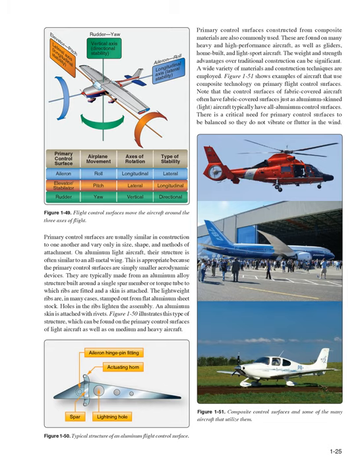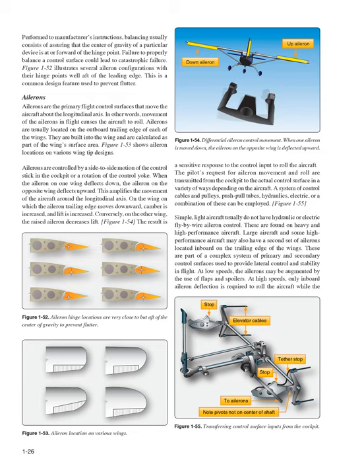A wide variety of materials and construction techniques are employed. Note that the control surfaces of fabric-covered aircraft often have fabric-covered surfaces, just as aluminum-skinned light aircraft typically have all-aluminum control surfaces. There is a critical need for primary control surfaces to be balanced so they do not vibrate or flutter in the wind. Balancing usually consists of assuring that the center of gravity of a particular device is at or forward of the hinge point. Failure to properly balance a control surface could lead to catastrophic failure. Several aileron configurations have their hinge points well aft of the leading edge — a common design feature used to prevent flutter.